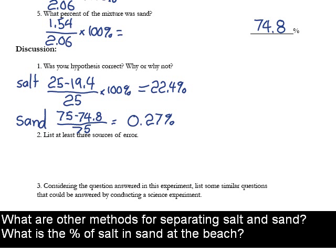And so the last part here, thinking of some other questions that could be answered by conducting a science experiment. I have two listed here, and yours don't have to be like mine. Yours can be similar ideas, but they don't have to be the exact same thing here. There's a variety of questions. One I had was what are other methods for separating salt and sand? Is there something else we could do besides dissolving the salt and filtering it out? And then what is the percentage of salt and sand at the beach, at an ocean beach? You could just measure, collect some sand down there, and perform an experiment similar to what we just did and determine the percentage of salt and sand at the beach. Okay, well that's all for lab activity number two.